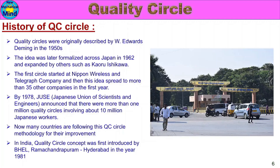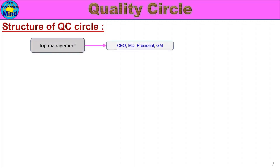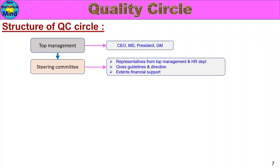This is the history of QC Circle. Structure of QC Circle: Quality Circle members are leaders and facilitators. First, Top Management — CEO, MD, President, GM — is responsible for approving the Quality Circle program. The Steering Committee, with representatives from Top Management and the HR Department, gives guidelines and directions and extends financial support.